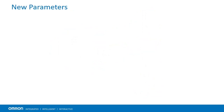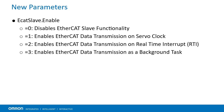Let's discuss parameters. All of these new parameters begin with the ECATSlave prefix. The first parameter is ECATSlave.enable. When set to 1, 2, or 3, it enables the EtherCAT Slave functionality. A value of 1 will transmit and receive EtherCAT data on the servo clock of the Slave. A value of 2 will transmit and receive EtherCAT data on the RTI, or real-time interrupt clock of the Slave. A value of 3 will transmit and receive EtherCAT data as a background task on the Slave.